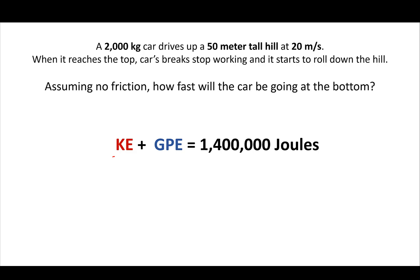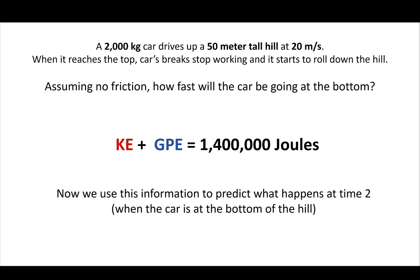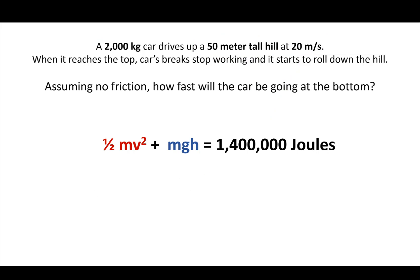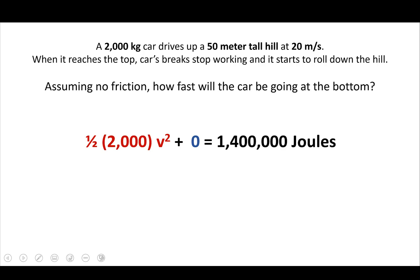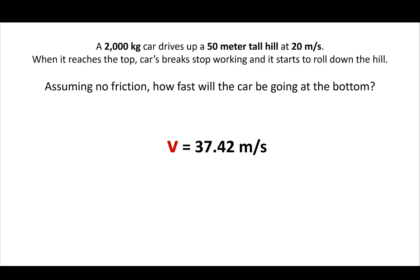At every single point, kinetic energy plus gravitational energy equals 1,400,000 joules. Now we use this to predict what happens at time two — when the car is at the bottom of the hill. At the bottom, the height is zero because the car is now on the ground. So GPE is zero. We still have one-half mv squared for kinetic energy. The mass is known, the velocity is what we want to find, and g equals 10. Solving through the algebra, the velocity comes out to 37.42 meters per second.